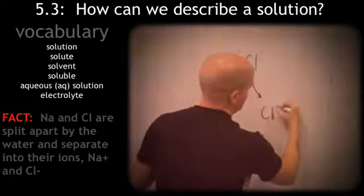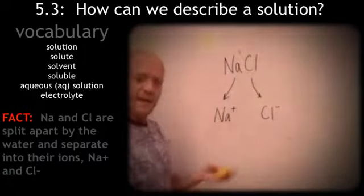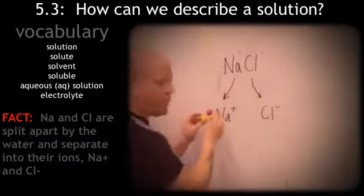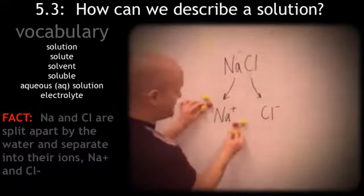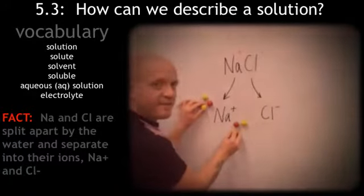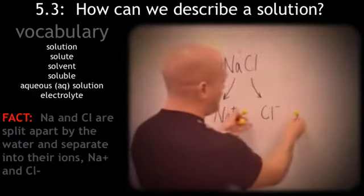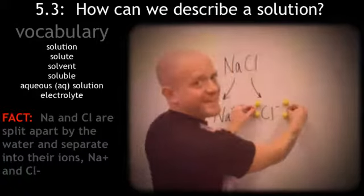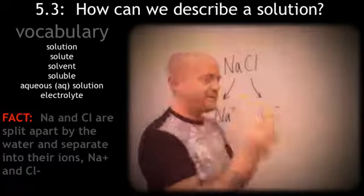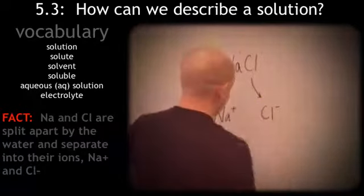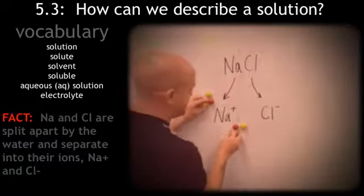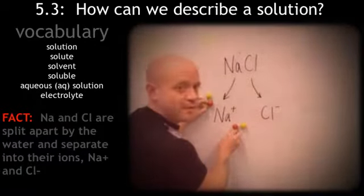...and what's going to happen is the water is going to orient itself around each one of these ions. So around the sodium, the water is going to shift itself like this. And around the chlorine, the water is going to shift itself like this. The positive hydrogens are going to be attracted to the negative chloride ions. Likewise, the negative oxygens are going to be attracted to the positive sodium ions.